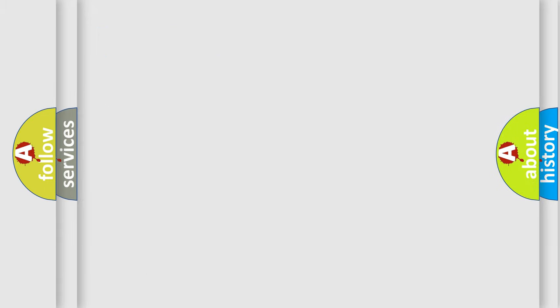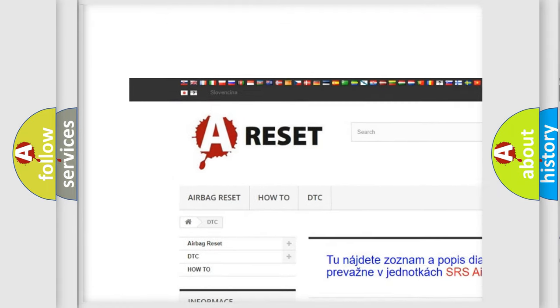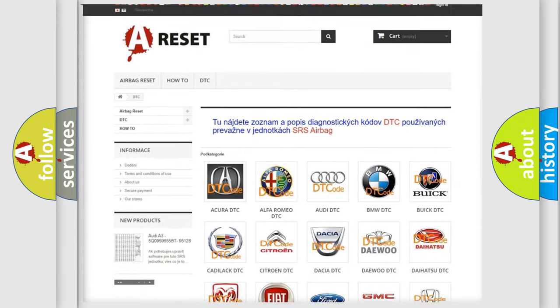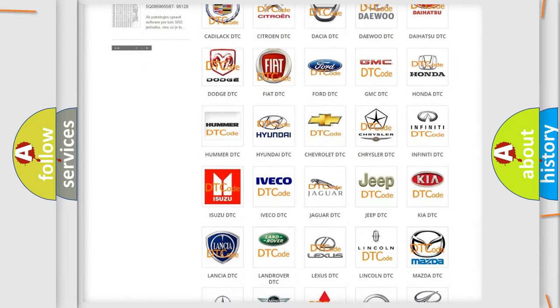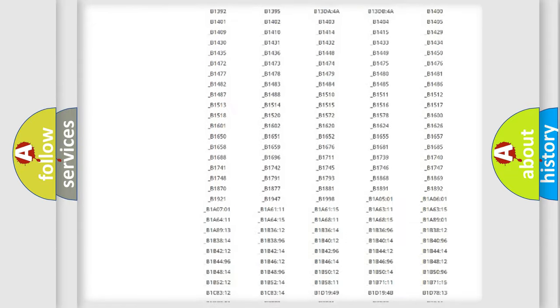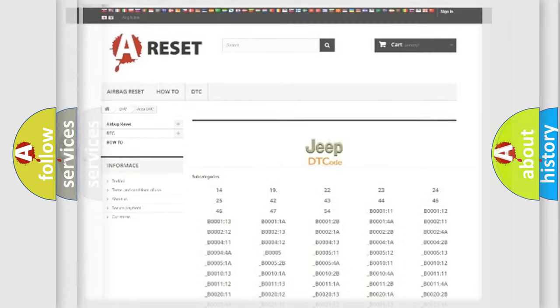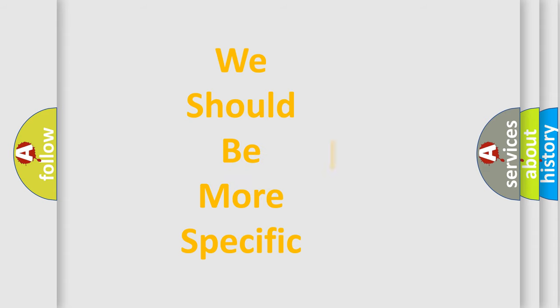Our website airbagreset.sk produces useful videos for you. You do not have to go through the OBD2 protocol anymore to know how to troubleshoot any car breakdown. You will find all the diagnostic codes that can be diagnosed in Jeep vehicles, and many other useful things. The following demonstration will help you look into the world of software for car control units.